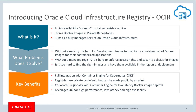The OCIR registry service is an Oracle-managed registry that enables you to simplify your development-to-production workflow. The registry makes it easy for developers to store, share, and manage development artifacts like Docker images. The highly available and scalable architecture of OCI ensures you can reliably deploy applications without worry about operational issues or scaling your underlying infrastructure.